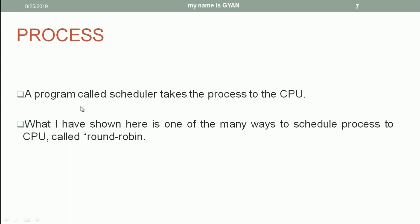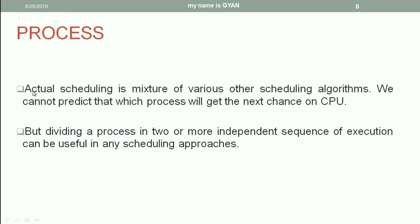We have already seen that a program called the scheduler takes the process to the CPU. What I have shown here is one of the many ways to schedule processes to the CPU, called round robin. There are many other ways to schedule processes to the CPU. The actual scheduling process in various operating systems is a mixture of various scheduling algorithms. We cannot predict which process will get the next chance on the CPU — as a user, you cannot predict which process is going to be executed next. Inside, there is an algorithm executed by the operating system and all the processes get a chance on the CPU.